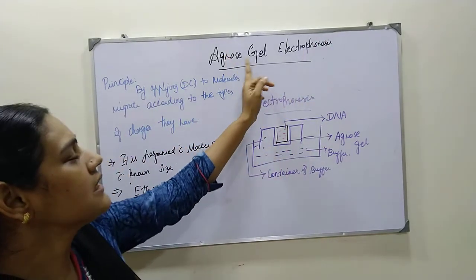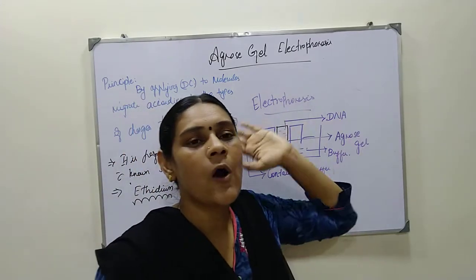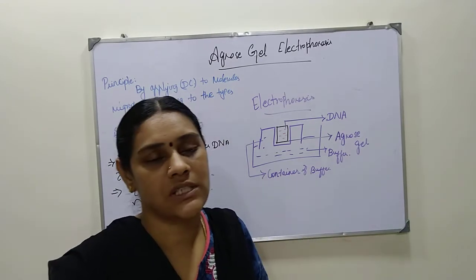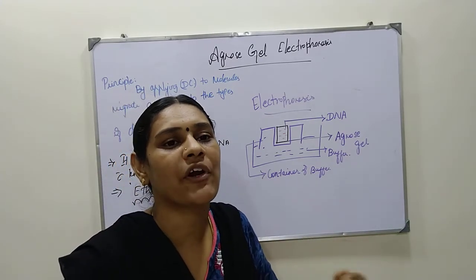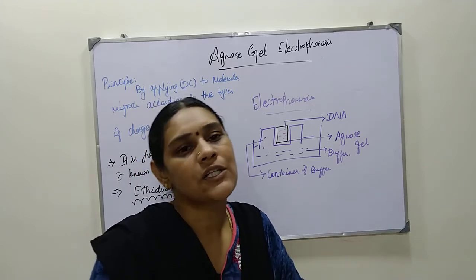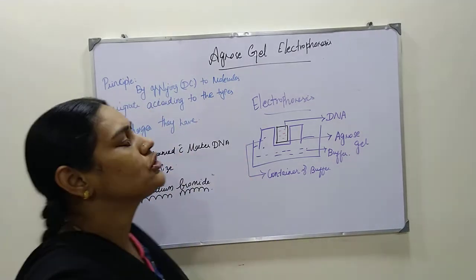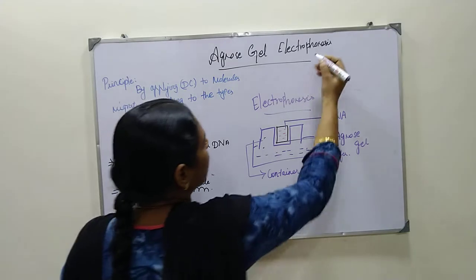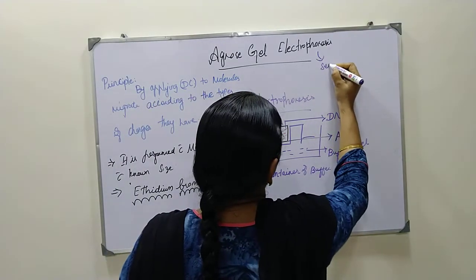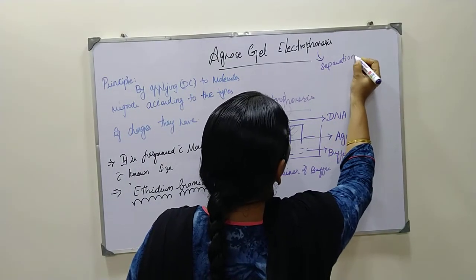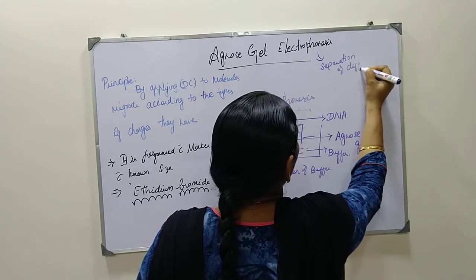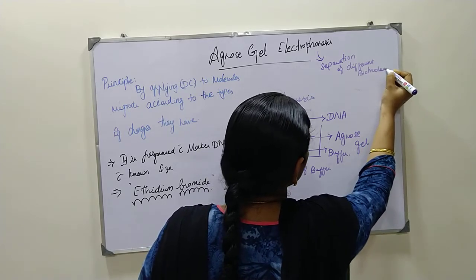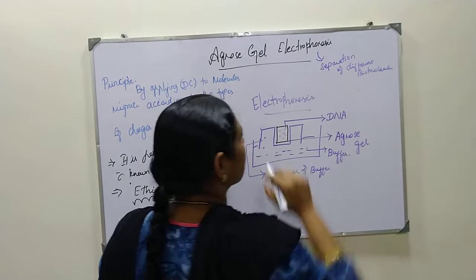The gel name is agarose. So running of the current — the electricity on the gel — the biomolecules get separated based on their charges. So the introduction to agarose gel electrophoresis: it is actually a separating technique. It is a separating technique of separation of different biomolecules. Different biomolecules are going to be separated by using this electrophoresis technique.